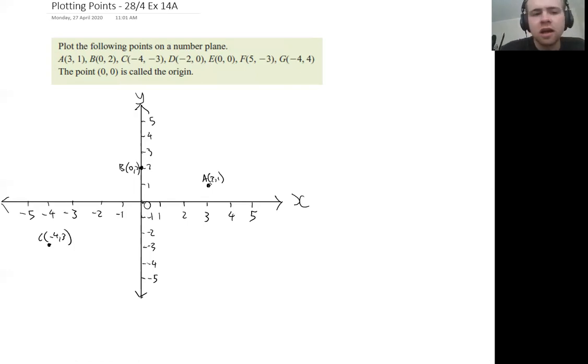And you sort of get the idea - always start on the horizontal, the x, for the first number. This one is going to be negative two, and it's zero on y, which means it's just on the x-axis here. D is (-2,0).